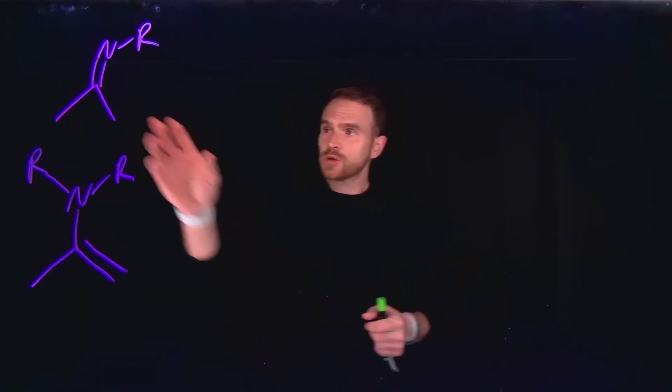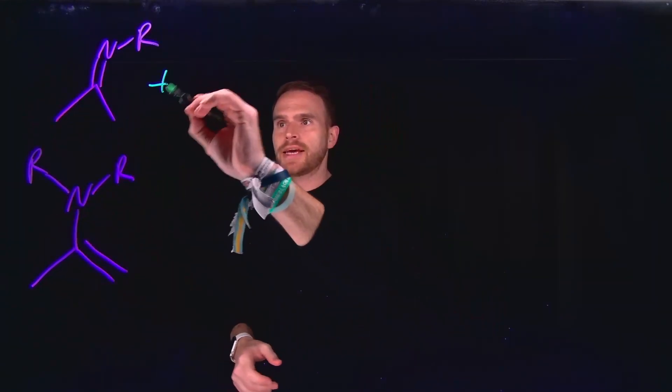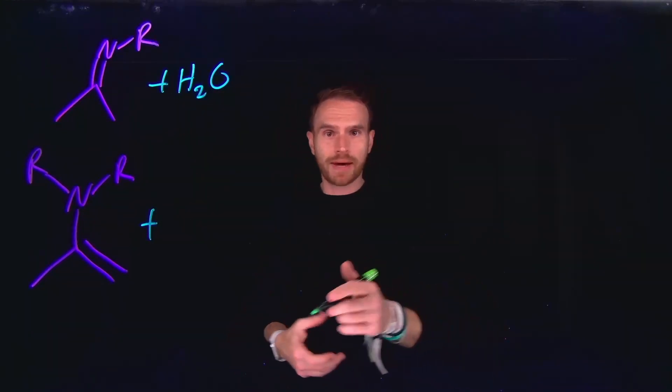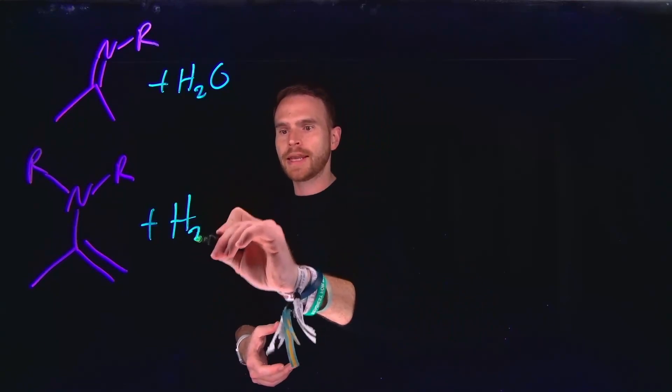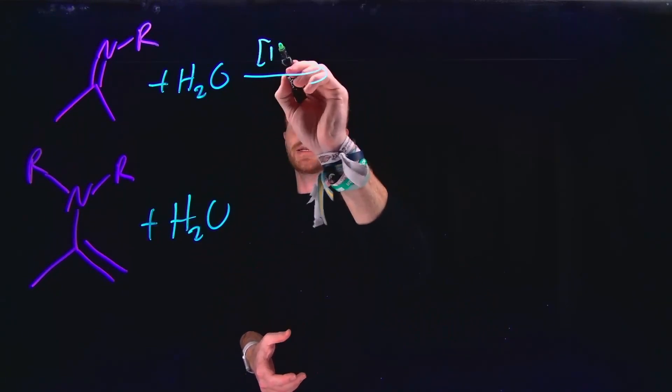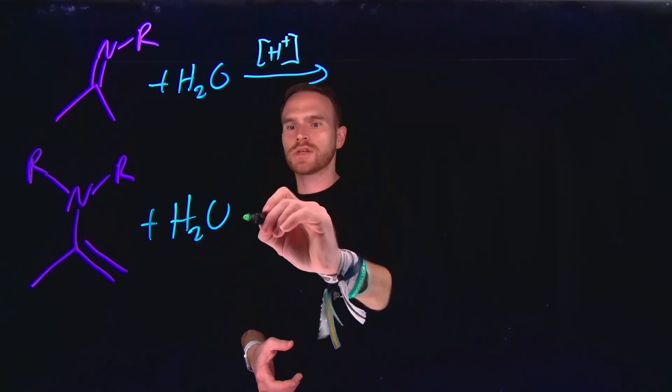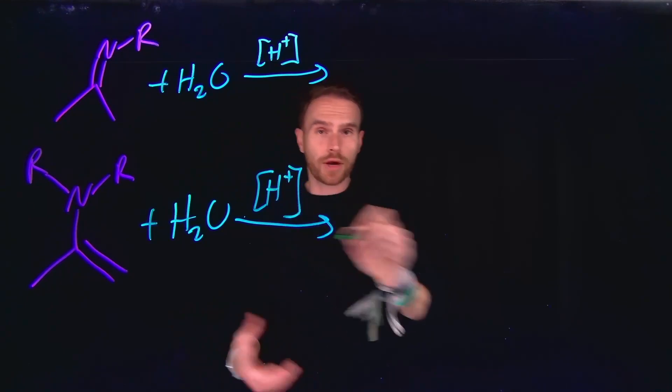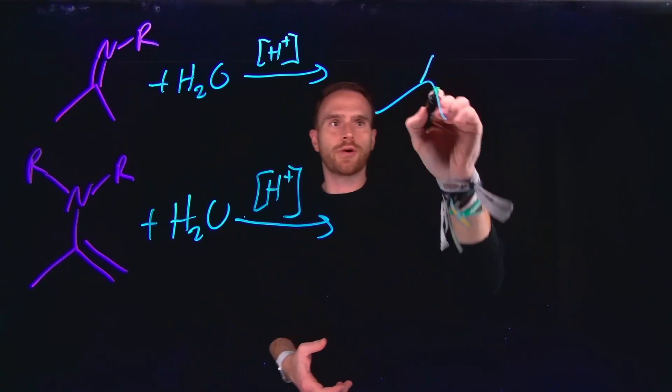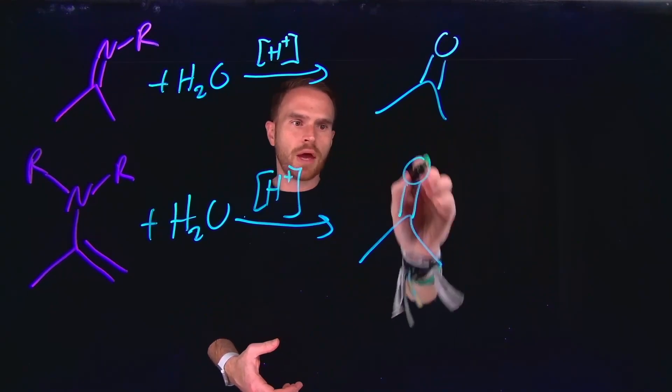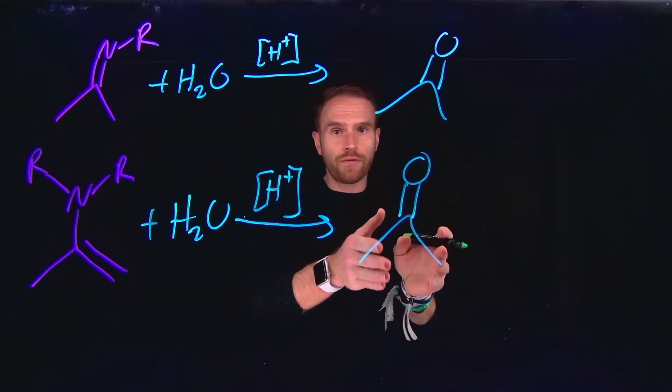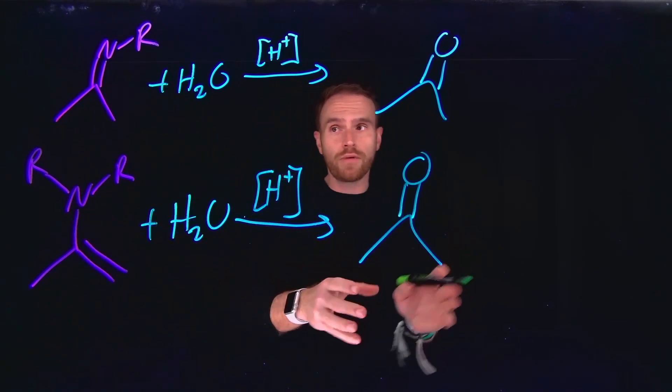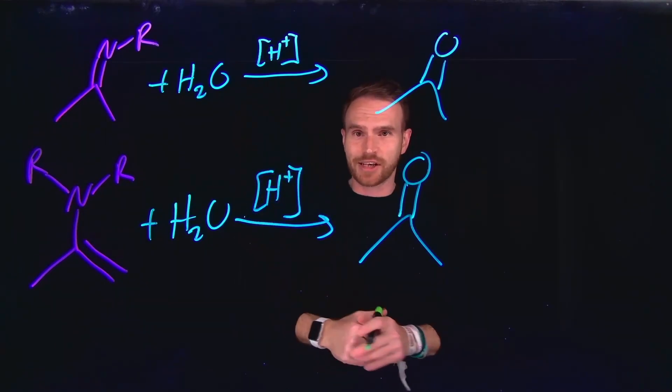Now importantly, once we have formed imines and enamines, they can both react with water following the reverse of both of those mechanisms that I just drew for you and undergo hydrolysis under acidic conditions. And this allows us to actually remove these functional groups and what will be regenerated is our starting carbonyl compound. So this gives us another example of a way to install new functional groups by forming imines and enamines and then subsequently remove them via hydrolysis using water and acidic conditions.